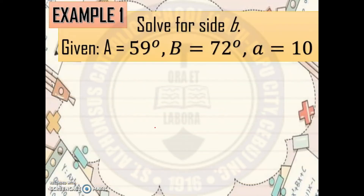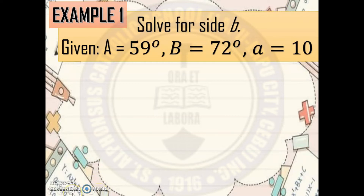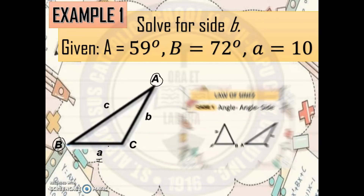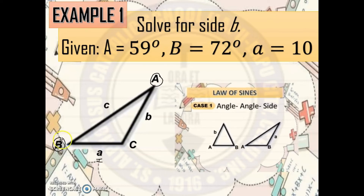Let's proceed with Example 1: Solve for Side b. Given: angle A = 59°, angle B = 72°, and side a = 10. Note: when a letter is capitalized, it means angle; when it is lowercase, it means the side. We illustrate this problem into a triangle. This is a Case 1 problem, since the given is two angles and one side opposite to one of them, so we will use the Law of Sines.